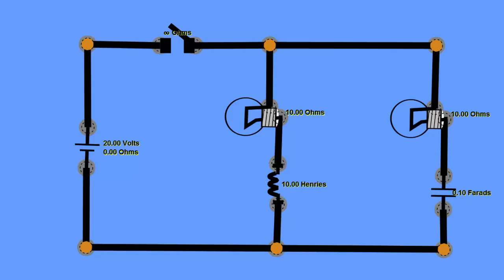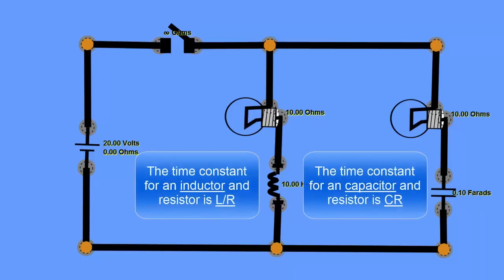Now we know the time constant for an inductor is L over R, and the time constant for a capacitor is C times R. So you should be able to calculate the time constants for both of these, and what you're going to find out is it's the same time constant for each one.